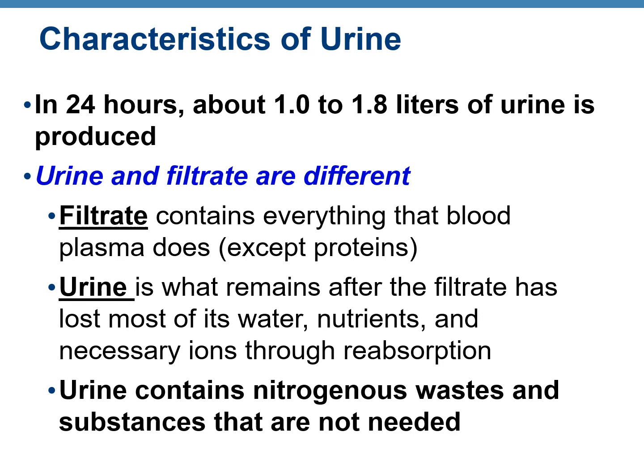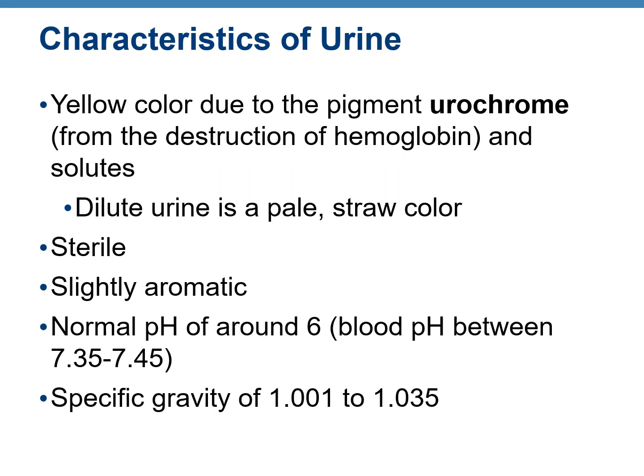Urine mostly contains waste products such as nitrogenous wastes and substances not needed by the body. Urine appears yellow in color due to a pigment called urochrome, which is formed from the destruction of hemoglobin — that means when hemoglobin is broken down to be reused.